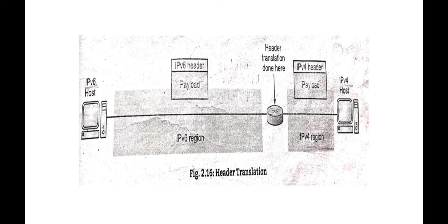The actual data remains the same — normal data — but the envelope (header) will be changed to IPv6 or IPv4 as required. When the source sends an IPv4 packet to a system that supports IPv6, it goes to the header translation device which removes the IPv4 header and adds an IPv6 header, so the destination system can understand and read it. This ensures proper communication.